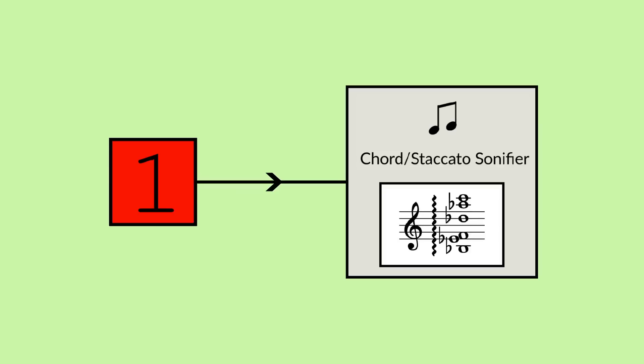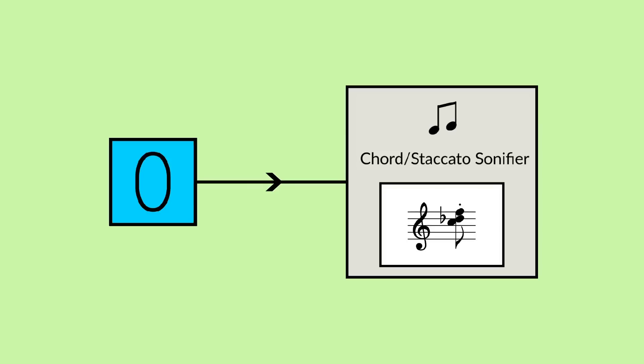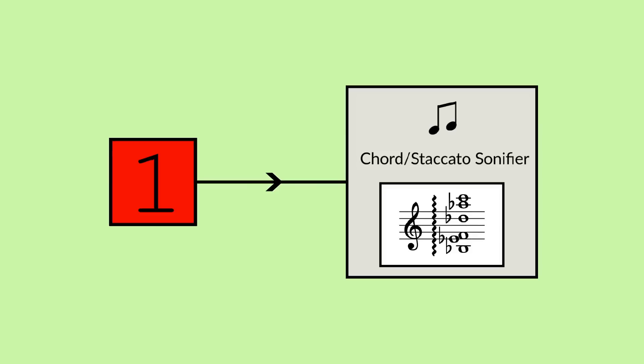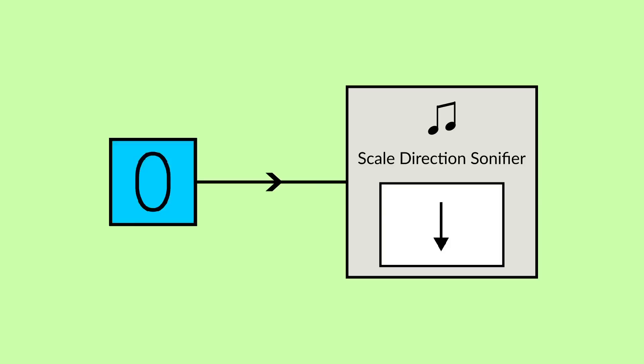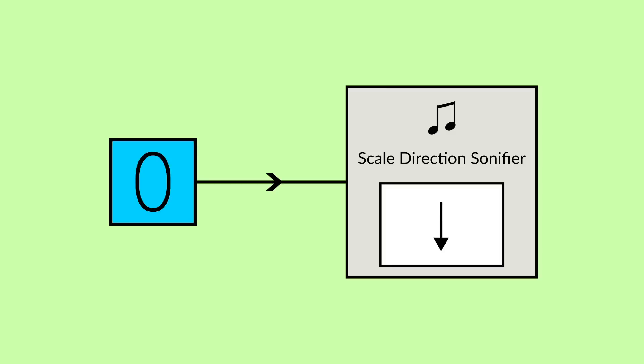A different approach might be to have the digits act as a control signal for a more abstract property of the music. Here, the music is a constantly running scale, with the zeros and ones determining the direction — up or down — with which we move along the scale.